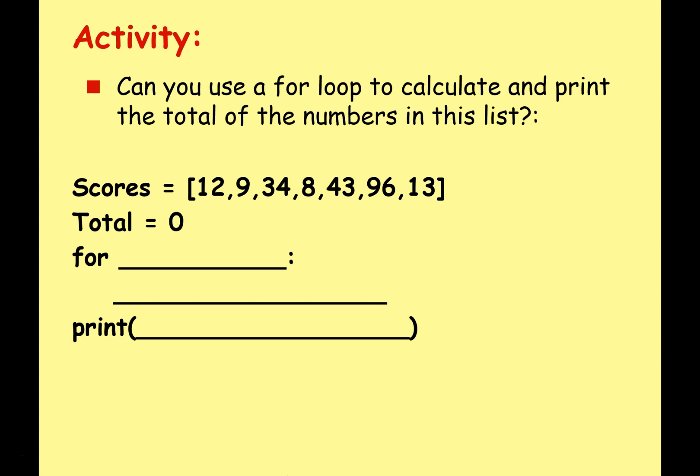Let's look at another activity. Can you use a for loop to calculate and print the total of numbers in this list? You've got a whole set of numbers and another variable set to zero. Iterate through each item in the list, add the scores to the total, and print out the final total at the end. This is a really important task because in your exam, paper two, there's almost always a list or array question where you need to calculate a sum or average.